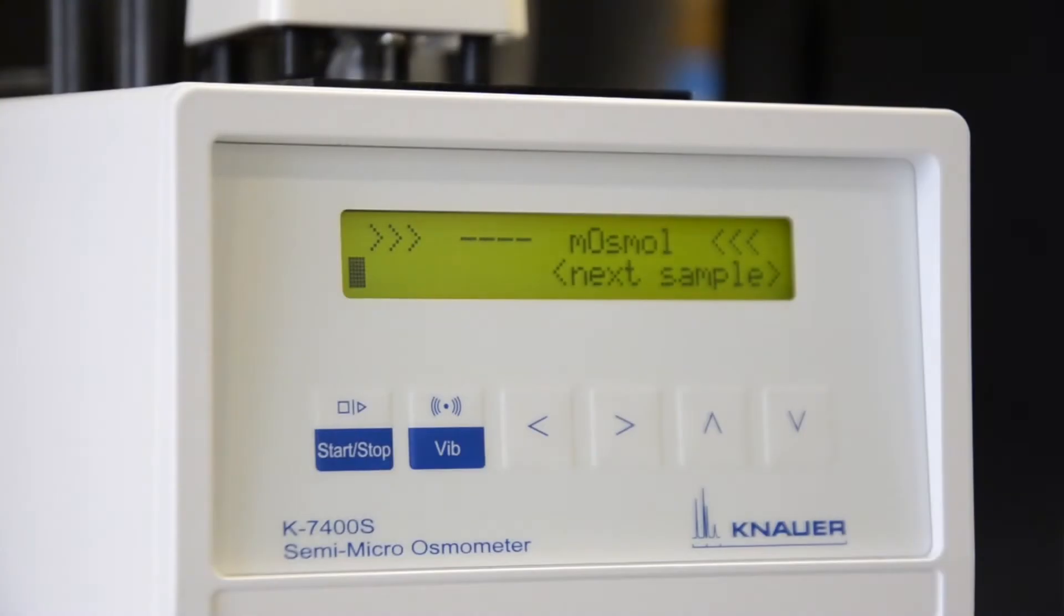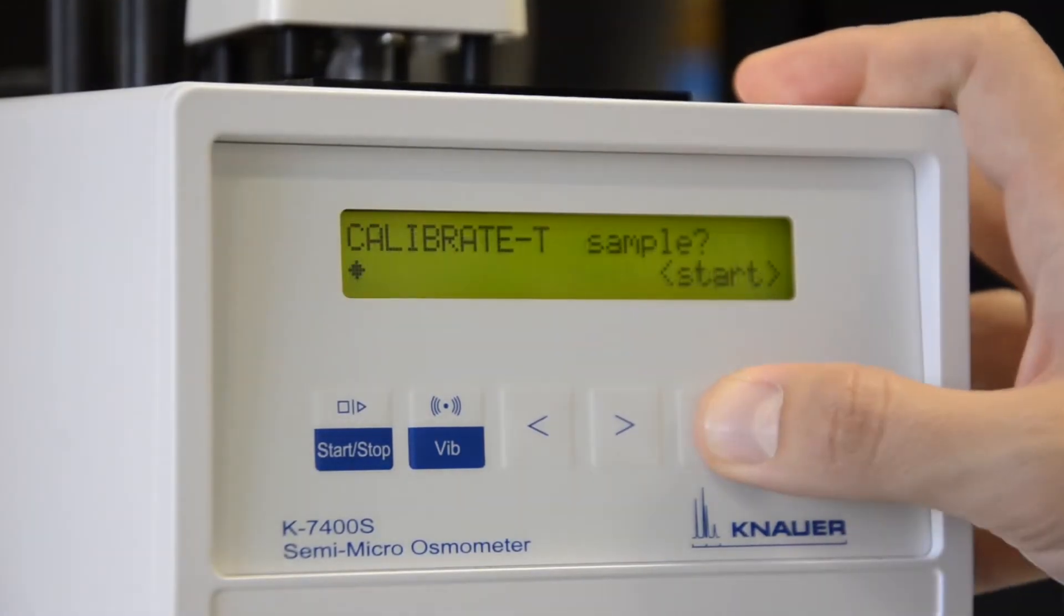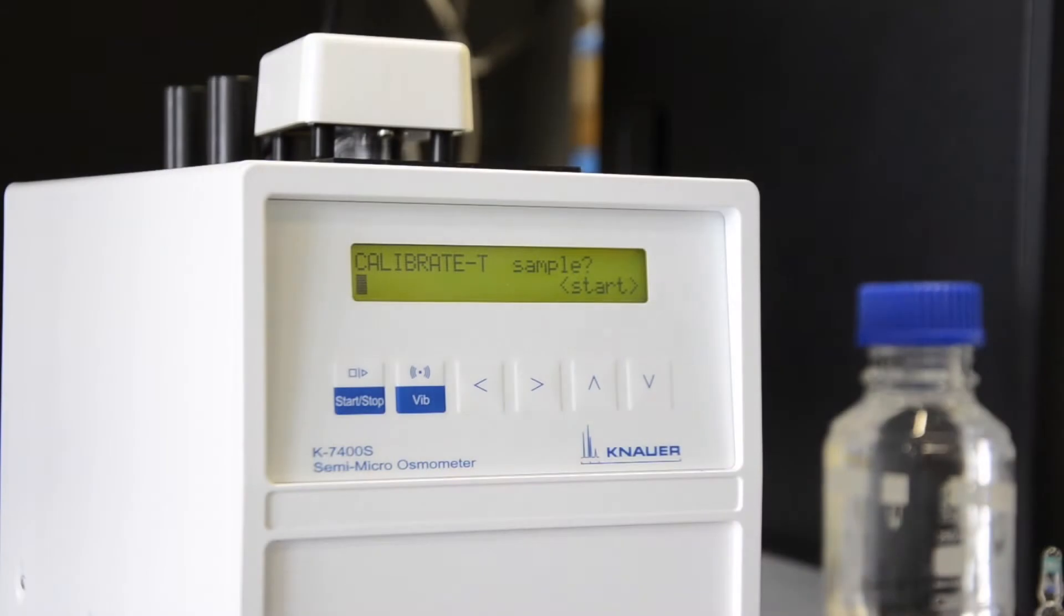From here you can easily go to the Calibrate T menu by just pressing once the up button. In this menu the thermistor of the measuring head is calibrated to the respective osmometer.